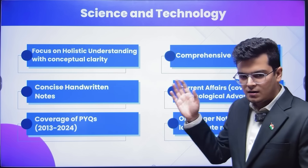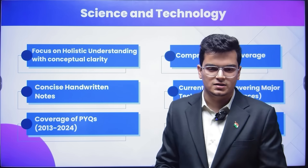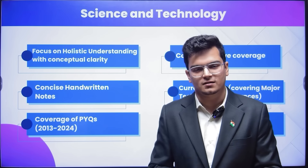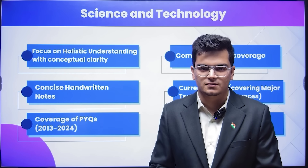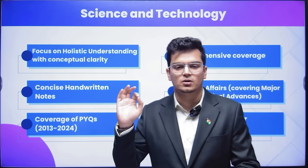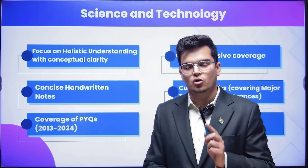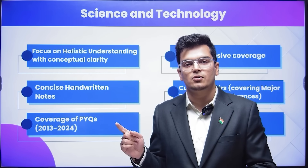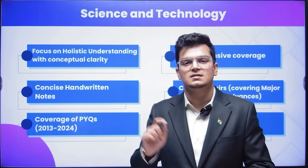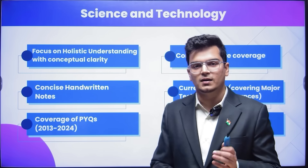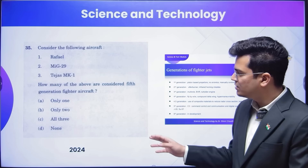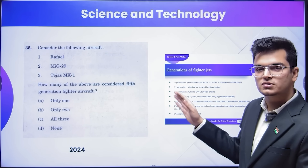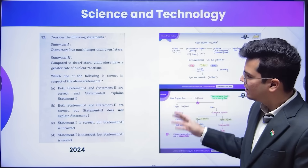Now let me come to the second subject — science and technology. In the market, there was a major misconception that science and technology is only current affairs. I am proud that I am the one who broke that misconception. Science and technology is about conceptual clarity. If we understand the concepts well, then current affairs will also be easily understood and remembered, and we will be able to solve questions on both current affairs and basic science. I taught science and technology for prelims 2023, and from that course, questions came not only in 2023 but even in 2024.